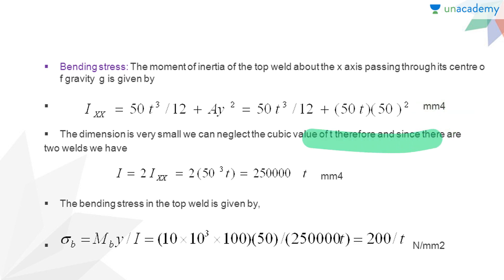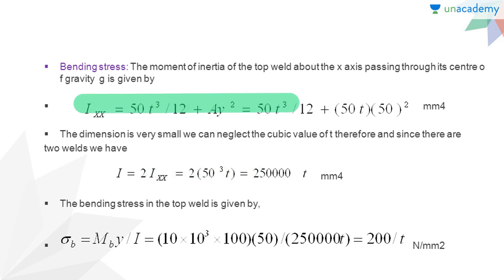After neglecting the cubic term, we calculate I_XX for one weld. Since we have two welds, we multiply by 2 to get the total second moment of area of the weld pattern: I = 2 × I_axis = 2 × 50³ × T = 250,000T mm⁴.